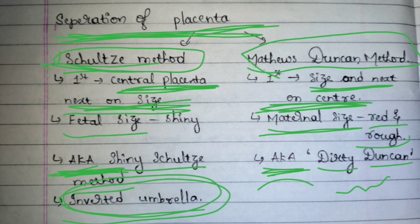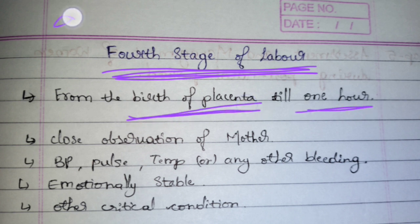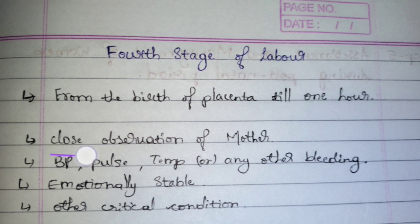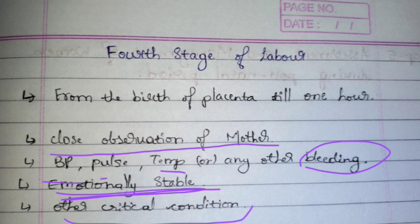The fourth stage of labor is normally not asked in the exam. For general knowledge: it is from the delivery of the placenta until one hour after. During this stage the mother is closely observed — vital signs (BP, pulse, temperature), bleeding, and emotional stability are all checked. We examine her for any critical conditions such as uterine hemorrhage. Taking care of the mother after delivery is known as the fourth stage.